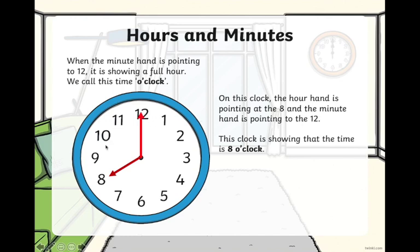Now, on this clock over here, the hour hand is pointing at the 8, and the minute hand is pointing at the 12. So we say that the time is 8 o'clock.